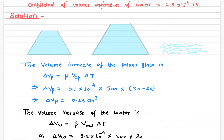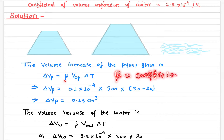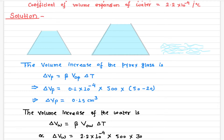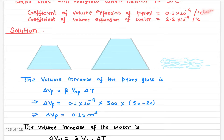First, we calculate the change in volume — the increase in volume — of the Pyrex glass using the standard thermal expansion equation. Here, the subscript P stands for Pyrex, and beta is the coefficient of volume expansion. V₀P is the initial volume of the Pyrex glass, and delta T is the change in temperature.